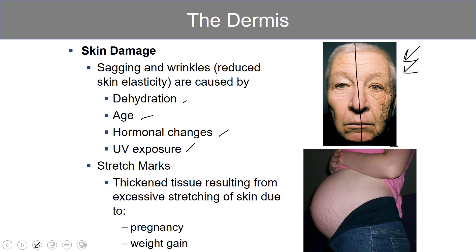Stretch marks are thickened tissue that results from excessive stretching of the skin, either due to weight gain or pregnancy. Basically, if the body grows quicker than the skin can, it leads to thickening of the tissues and stretch marks. Contrary to popular belief, there's not a lot you can do for stretch marks. There is a genetic component behind why some individuals are prone to them and others are not. Once you get them, they're there — some laser surgeries may reduce redness, but no cream or topical ointment can prevent them.